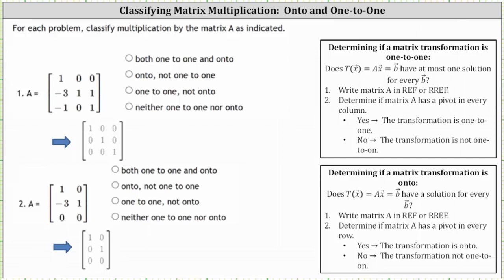To do this, we write the matrix in row echelon form or reduced row echelon form and identify the pivots. If there are pivots in every column, the multiplication is classified as one-to-one. If there are pivots in every row, the multiplication is classified as onto.